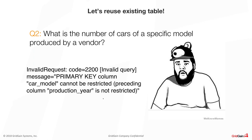The exception states you cannot get the data without specifying a timeframe — you must specify a year to get information for. This is because in our table designed for query one, production year is part of the primary key and goes before the car model field, requiring you to specify the year first. Otherwise you get an exception. You have two options: ignore the exception and Cassandra will do a full scan, which is not optimal, or create a different table.